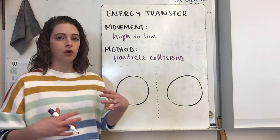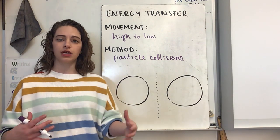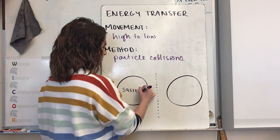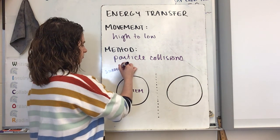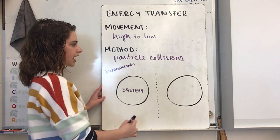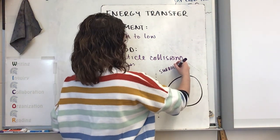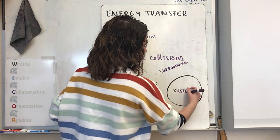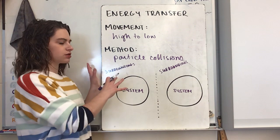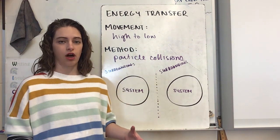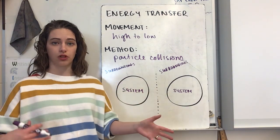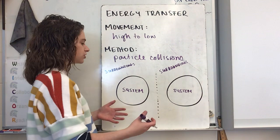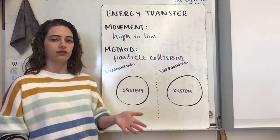When we talk about this transfer, we're going to use terms we've used before: system and surroundings. The system is the thing we're looking at, and the surroundings is everything outside. Together, the system and surroundings make up our universe. How we define our system, just like with the law of conservation of mass, is going to determine how we're looking at energy flow. There are two ways we look at energy flow — it's always from high to low, but whether that means going into or out of the system has its own terms.